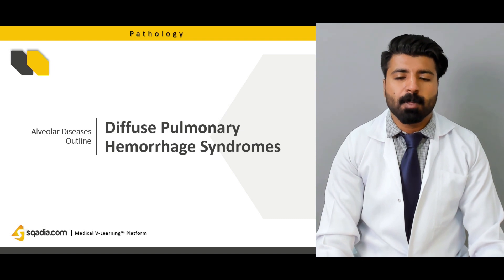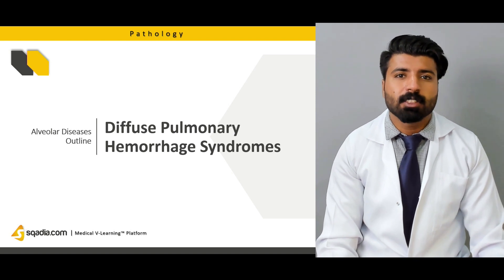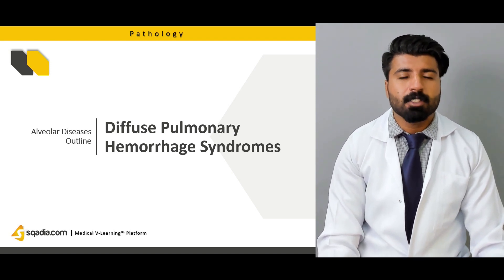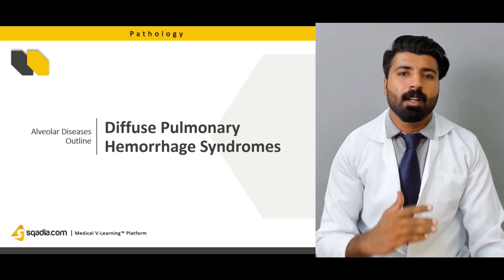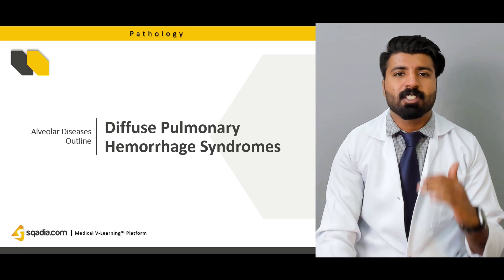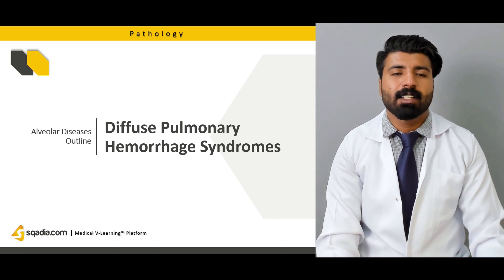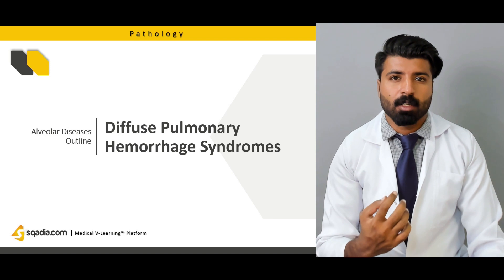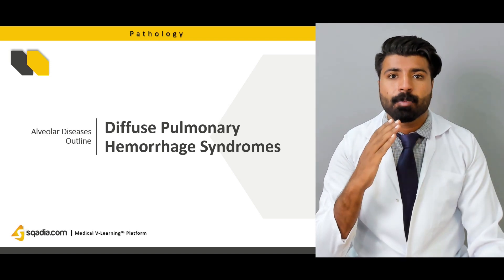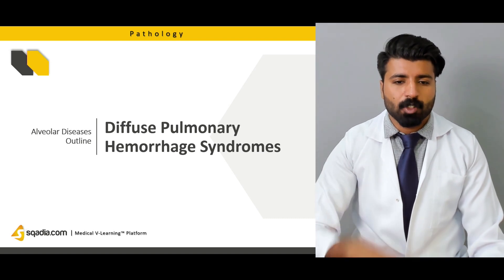Next, we're going to talk about diffuse pulmonary hemorrhagic syndromes, which is a heading that contains three subheadings: Goodpasture syndrome, idiopathic cases, and granulomatosis with polyangiitis. We're going to talk about how these three diseases affect the basement membrane and surrounding structures such that blood starts accumulating inside the alveoli. When blood accumulates inside the alveoli, it affects the whole lung system and the blood system — it leads to blood in the cough and also to iron deficiency anemia because blood is pouring out.